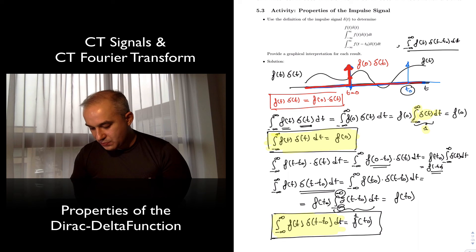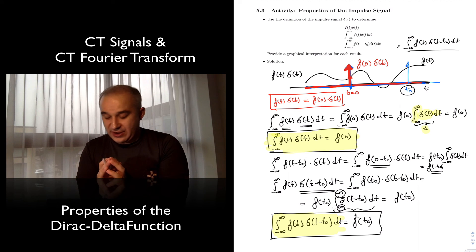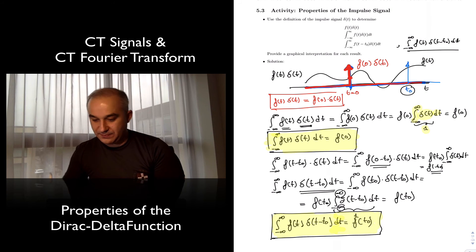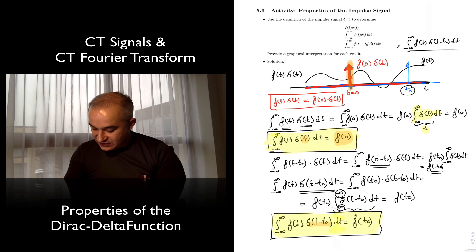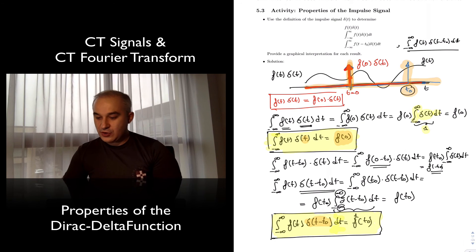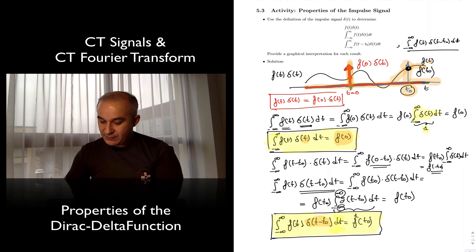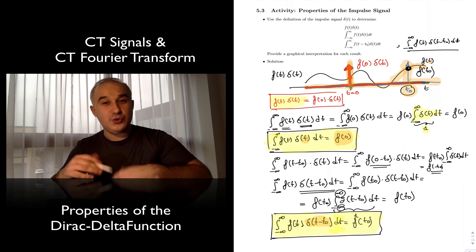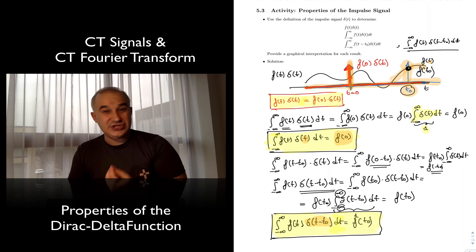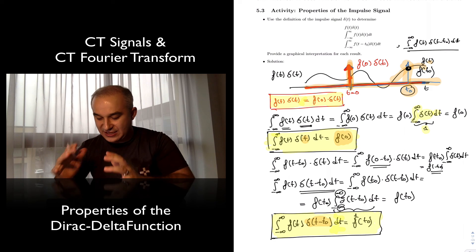So once again: you pick a function, you multiply it times the impulse, and the result is still an impulse — largely undefined. But if you integrate it, what you get out is that function evaluated at a point. In the case that the impulse occurs at zero, you get the function evaluated at f(0). If you shift the impulse to t₀, you get that function evaluated exactly at that point — f(t₀) as the output. If you just multiply a function times the impulse and do not integrate it, you have an impulse out — you just change the area: technically you are multiplying it times the function at that point.